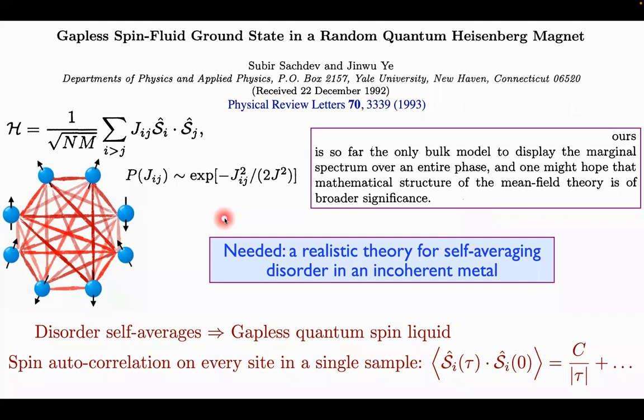And so, you will notice the physics here is very, very different from localization, where you effectively flow to an infinite disorder fixed point. Here, because of strong interactions and strong entanglement, the disorder just self-averages. And you get, in some ways, a much simpler theory, which you can make progress with.